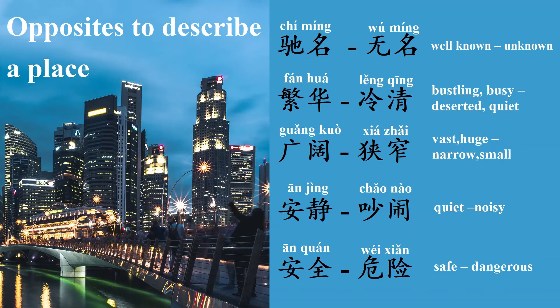Opposites to describe a place. 持明, well-known. The opposite of 持明 is 无名, unknown. 繁华, bustling, busy. The opposite of 繁华 is 冷清, deserted, quiet.